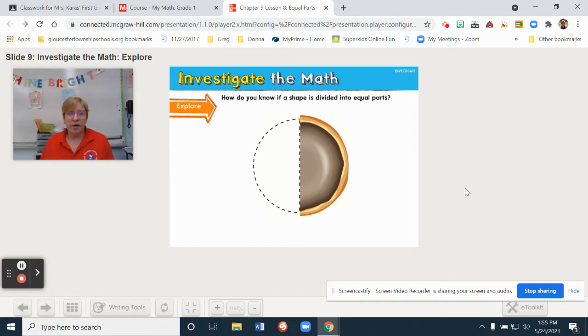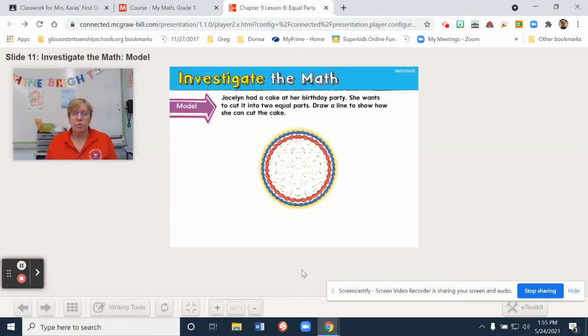We want to know, how do you know if a shape is divided into equal parts? Well here, I'm looking and it appears that this is a pie, a circle. It looks like it could be two parts that are equal, right? By cutting it in half. So that would be my guess, is that if it looks like there's the same amount, then it could be equal parts, such as now.